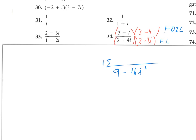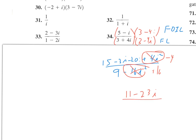On top we need the full FOIL since these are not conjugates, giving us 15 minus 3i minus 20i plus 4i squared. The 4i squared turns into negative 4, and the denominator's 16i squared turns into positive 16. Combining like terms gives us 11 minus 23i all over 25.